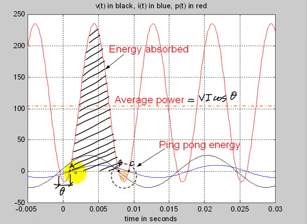In every power cycle, the element absorbs a certain amount of energy and then returns a little energy back to the source — like playing ping pong with the generator. The customer might say to the utility: charge me only for the energy I'm actually using, the average power, since I'm returning that ping pong energy every half cycle. But the utility responds: you're still using my transmission lines, generator coils, and transformer coils for that ping pong energy, so you have to pay for it.